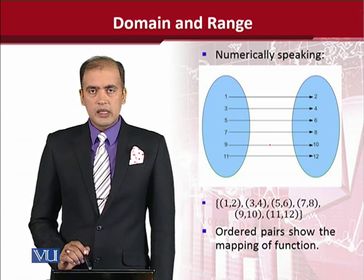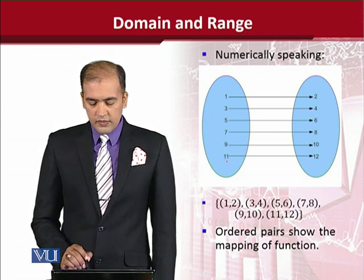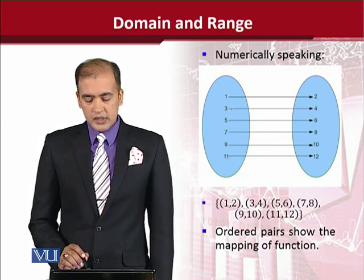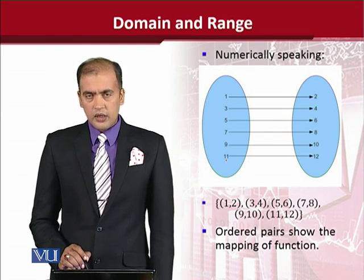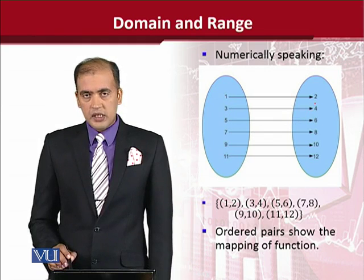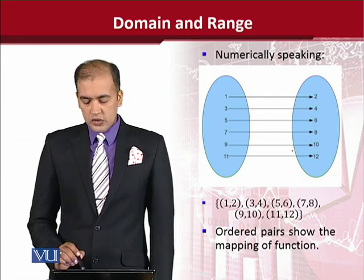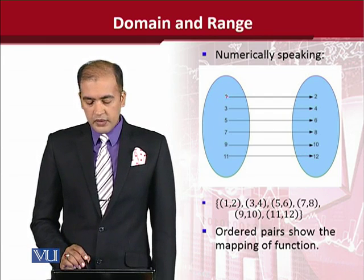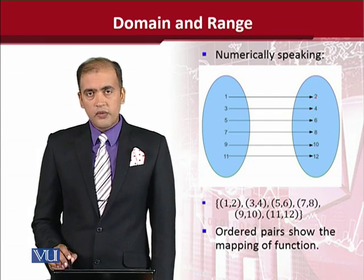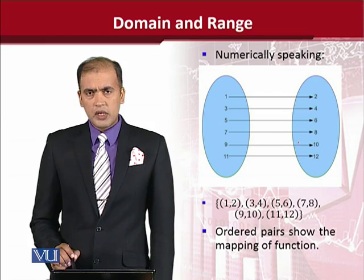Coming to a numerical example — the domain contains odd numbers starting from 1 and ending on 11. And on the right-hand side, the range is starting from 2 and ending at 12. For each value of x, there is one value of y, so domain and range are equally balanced.